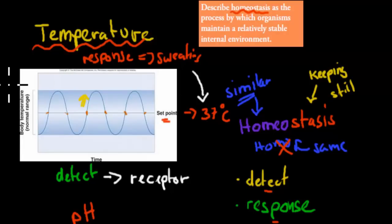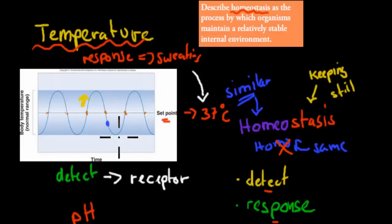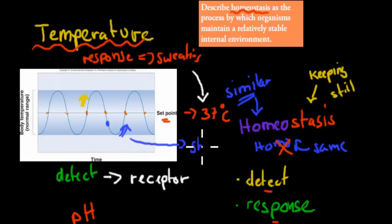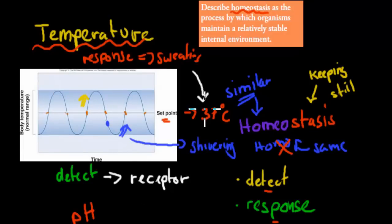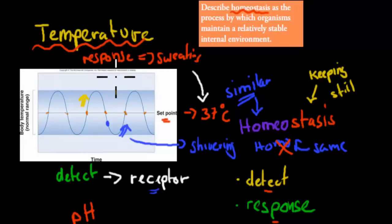If it's too low, our body first detects it through receptors, then brings it back up. One of the responses for this is shivering — if we shiver, our body heat increases, so we might go from 36 back to 37. Those are two examples of how we maintain a constant internal environment in terms of temperature: receptors detect the change, sweating when it's too high, and shivering when it's too low, to bring it back to 37 degrees Celsius.